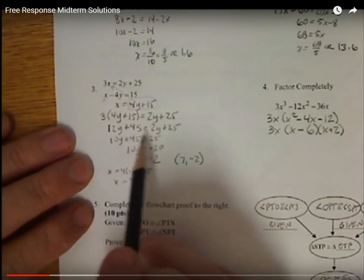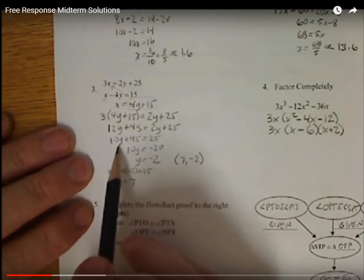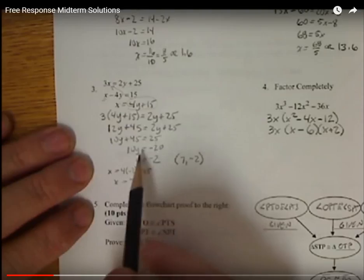Move my y's to one side. So I subtract the 2y. I get 10y plus 45 equals 25. Subtract 45 from both sides. I get 10y equals negative 20. Solve for y. I get y equals negative 2.